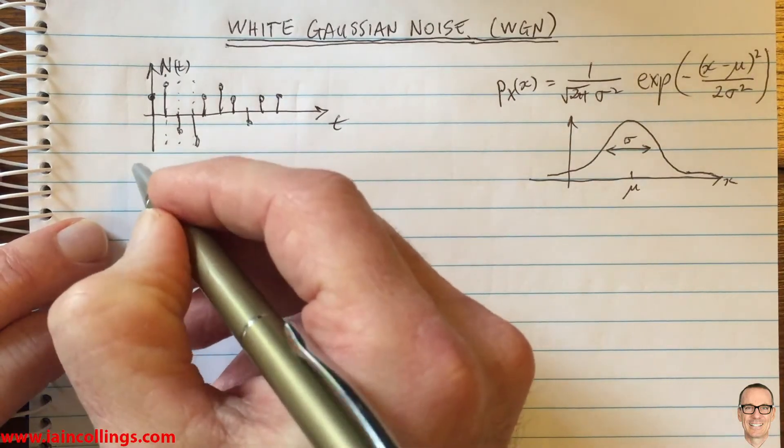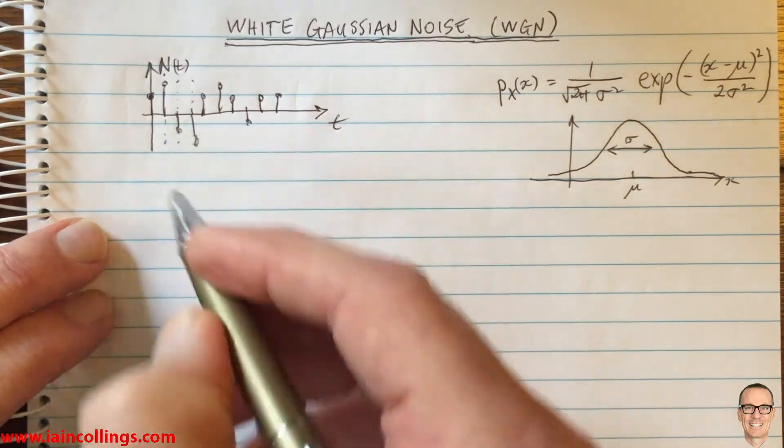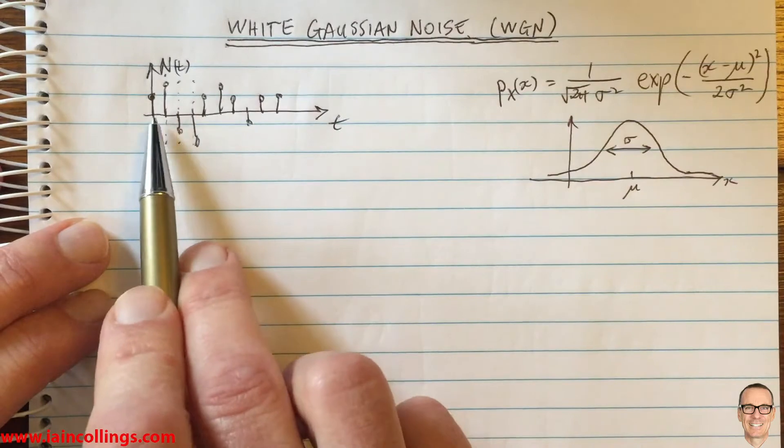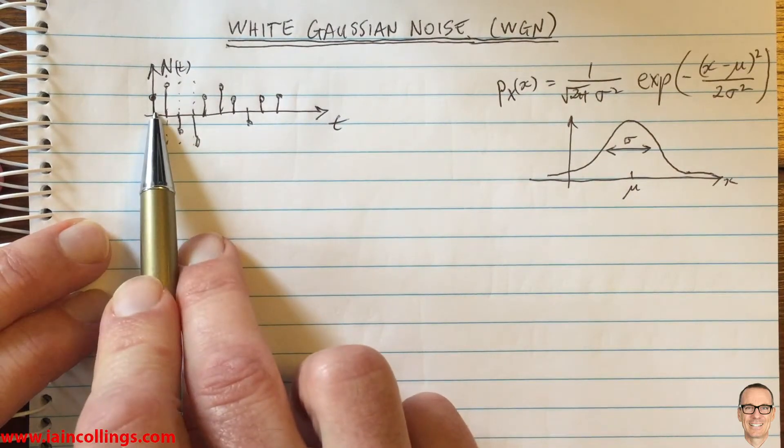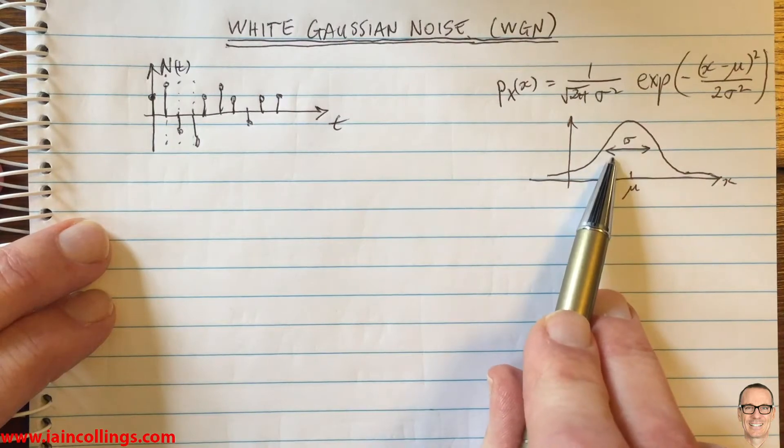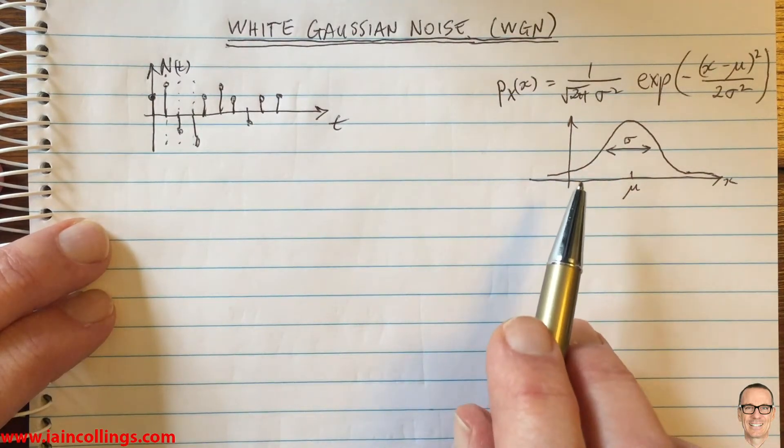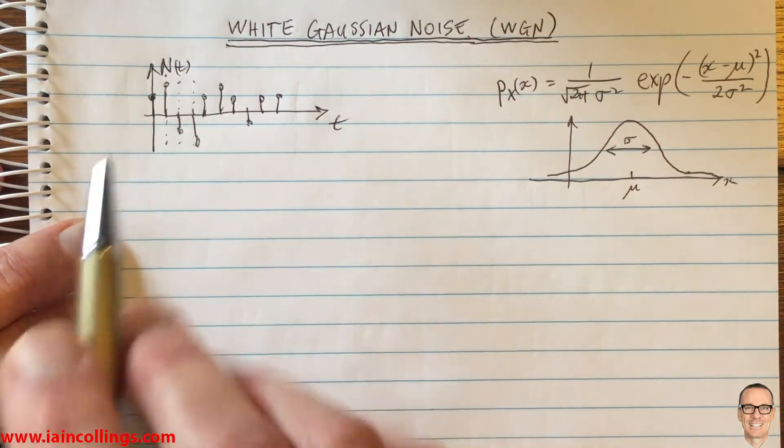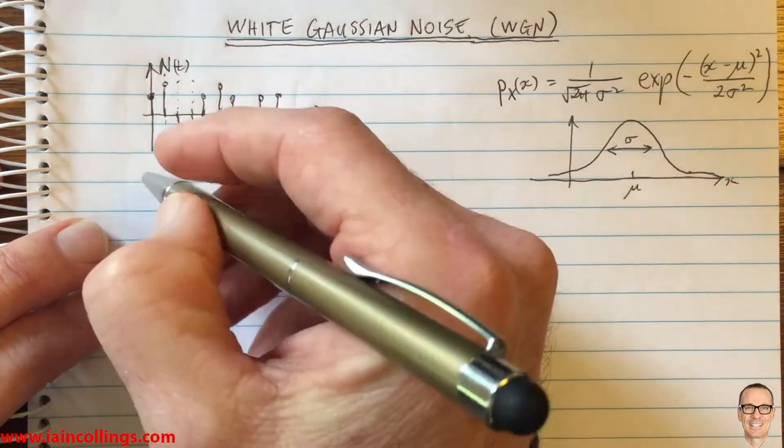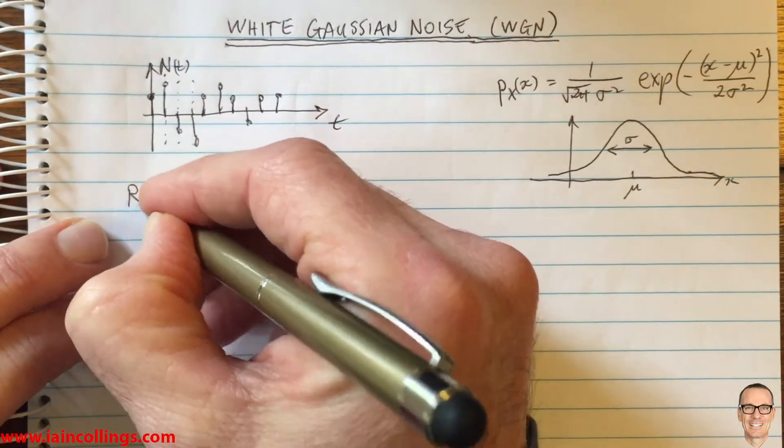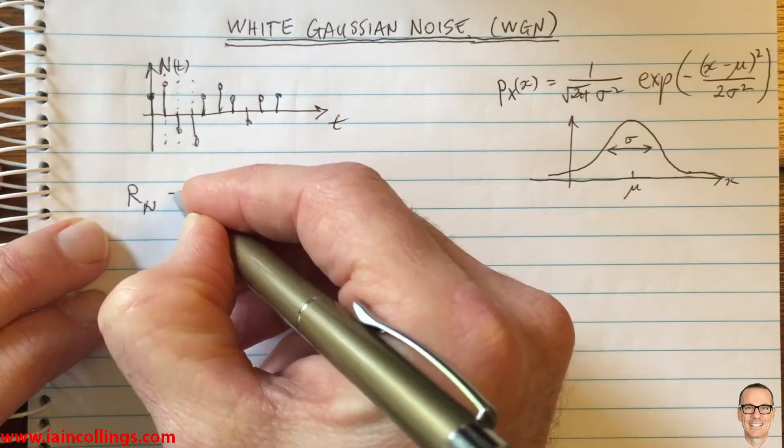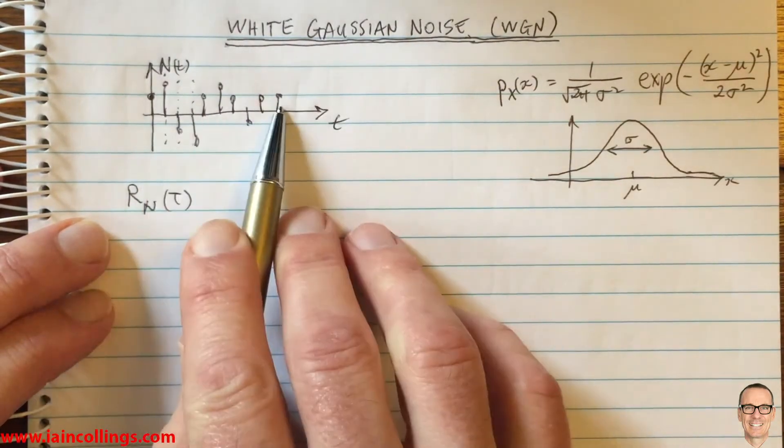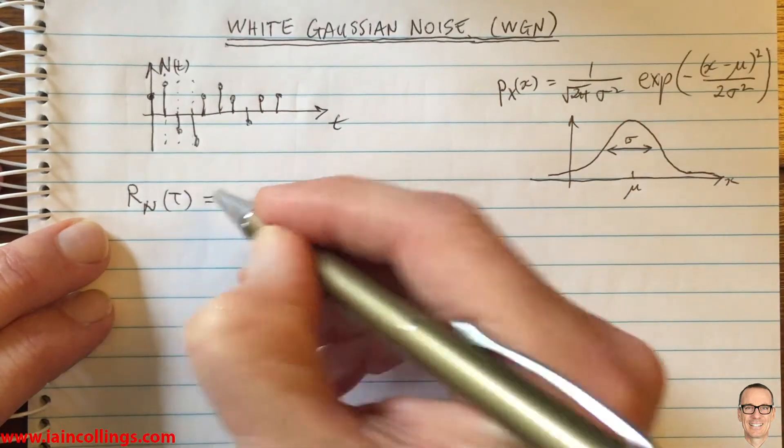So for random processes we have an autocorrelation function. In this case for noise, as we discussed previously, the noise is independent from sample to sample because it's coming from electrons moving in an amplifier, for example. So let's look at the autocorrelation function for this random process.